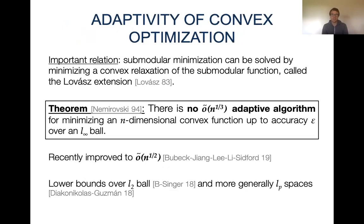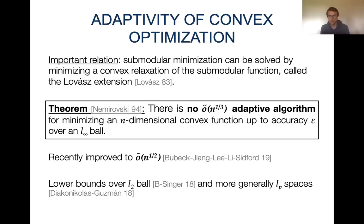What about convex minimization? There is an important relationship between convex minimization and submodular minimization, because the problem of submodular minimization can be solved by minimizing a convex relaxation of the submodular function called the Lovász extension. For convex minimization, we cannot get the same exponential speedups as for submodular maximization. A result by Nemirovsky from 1994 shows that we cannot get a subpolynomial adaptive algorithm that minimizes n-dimensional convex functions up to accuracy epsilon over the L-infinity ball.